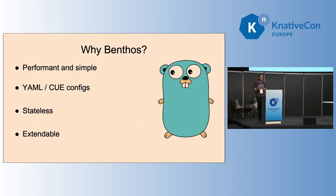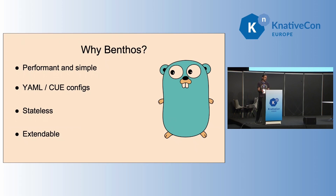Why Benthos? As you probably guessed, it's written in Go — it's performant and simple, very good at small workflows where you launch it as a Lambda and it does the job. It supports YAML and CUE configs — CUE is a recent addition used to generate the YAML config for Benthos. It's stateless, so it doesn't store any state locally about messages in flight. You can configure a cache for it — an in-process or external cache. And it's extendable: since it's written in Go, you can import it as a library, create a custom Benthos binary with your own additions, and have custom functionality.